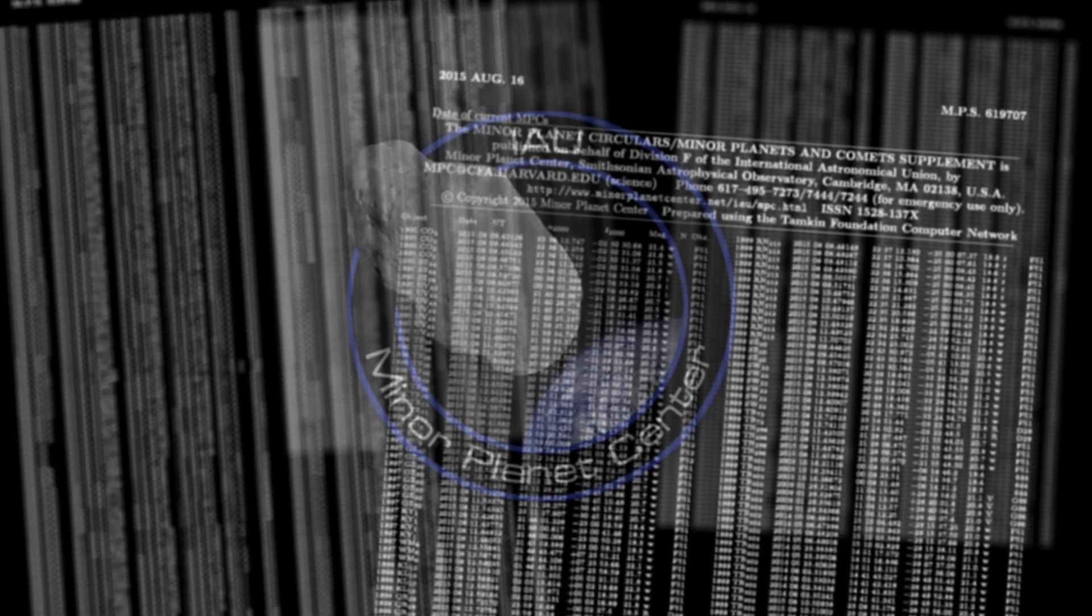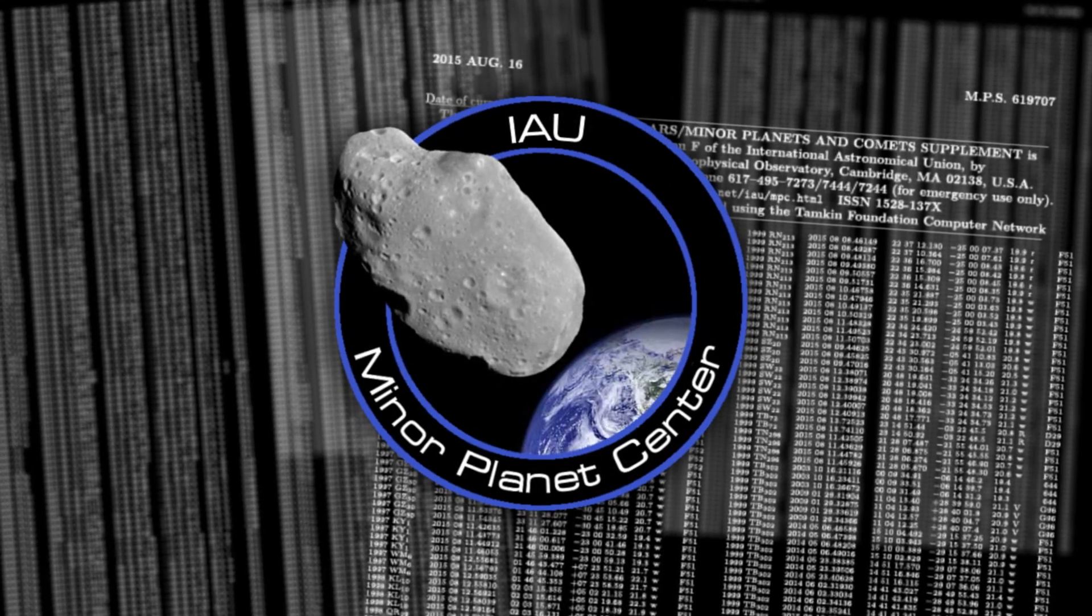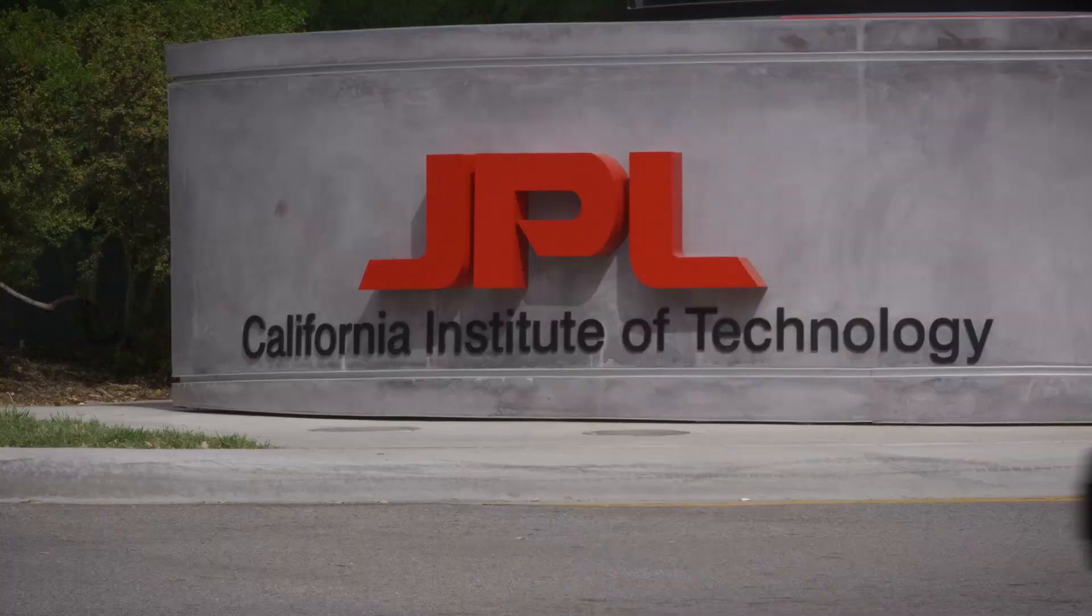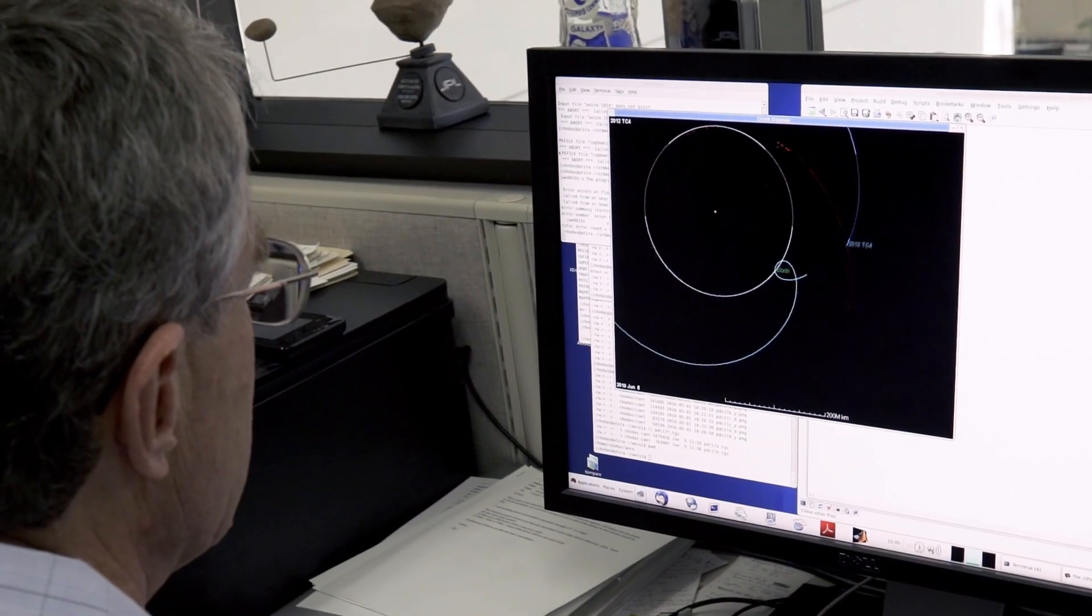The Minor Planet Center is the world clearinghouse for near-Earth asteroids. The Center for NEO Studies takes the observations from the Minor Planet Center and computes the high precision orbits that we use to make predictions.